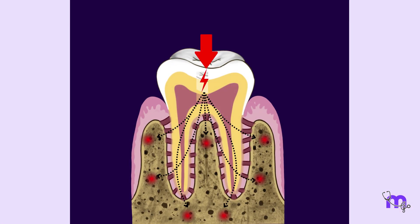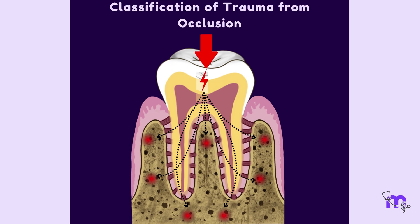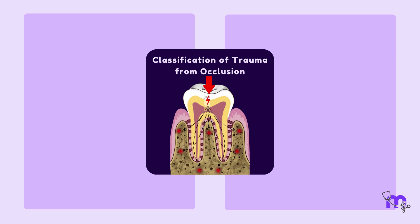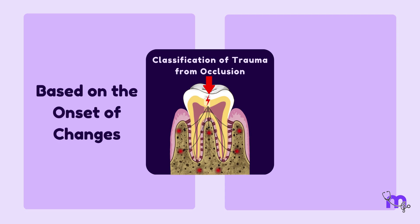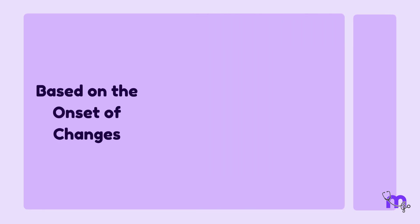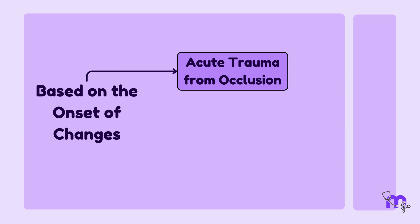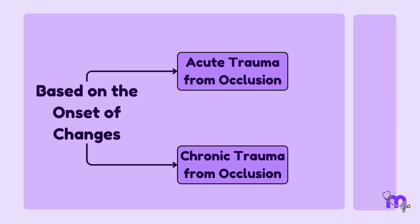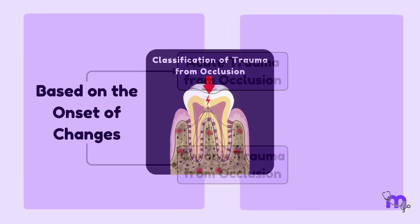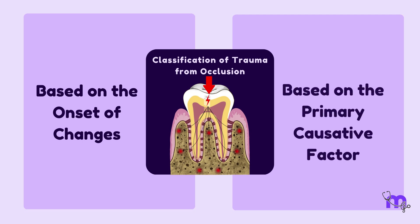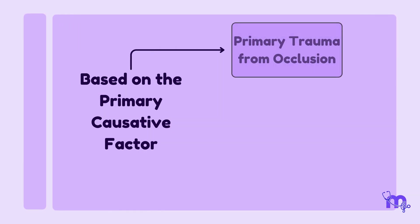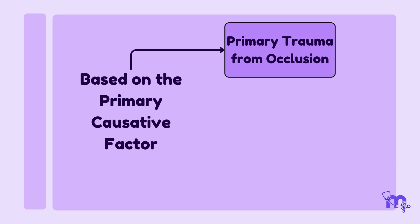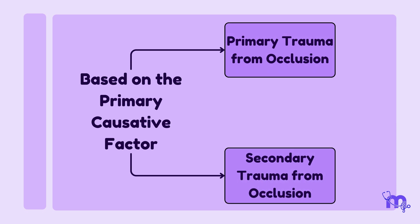Now let's learn the classification of trauma from occlusion. It can be classified in two ways. Based on the onset of changes, it can be divided into acute and chronic trauma from occlusion. Next, based on the primary causative factor, it can be classified as primary and secondary trauma from occlusion.